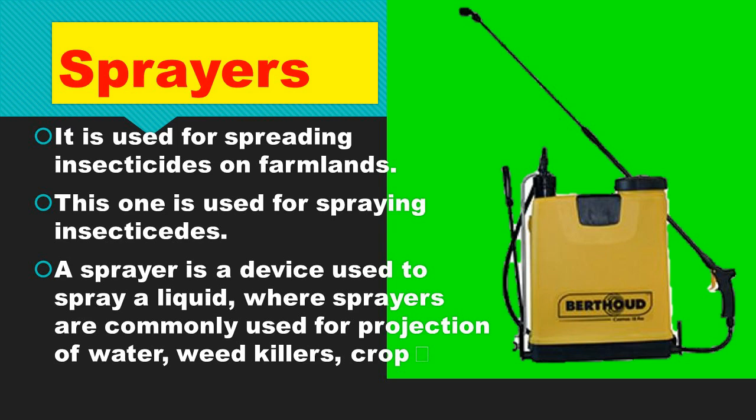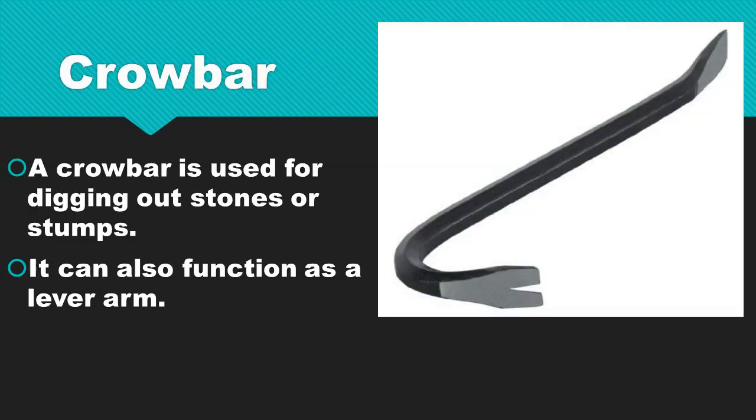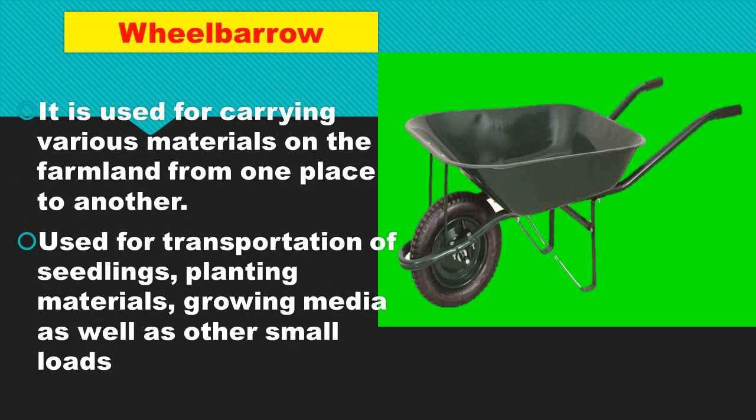Let's look at the crowbar. A crowbar is used for digging out stones or stumps. It can also function as a lever. The wheelbarrow is used for carrying various materials on the farmland from one place to another. It is also used for transportation of seedlings, planting material, growing media, and other materials.